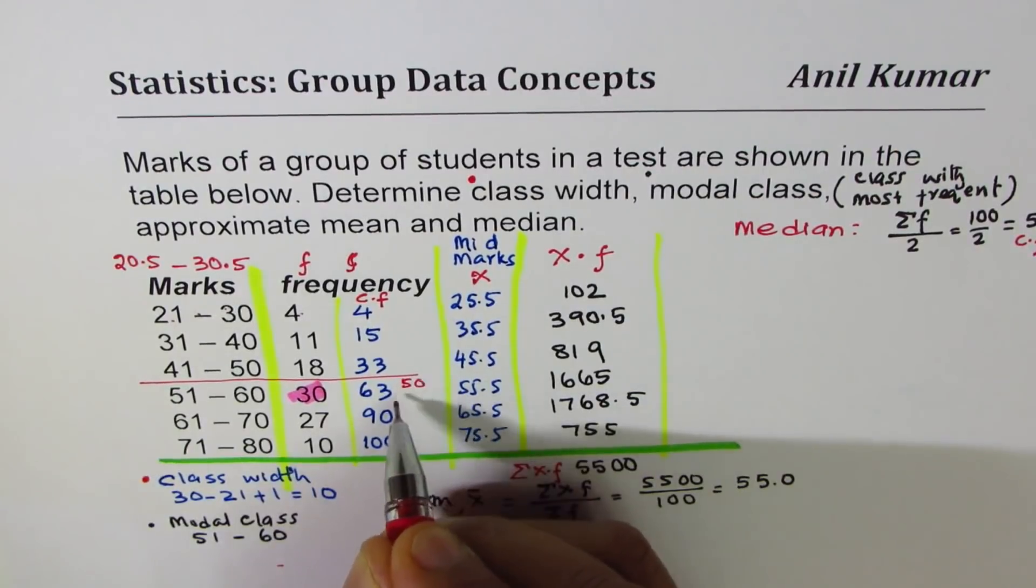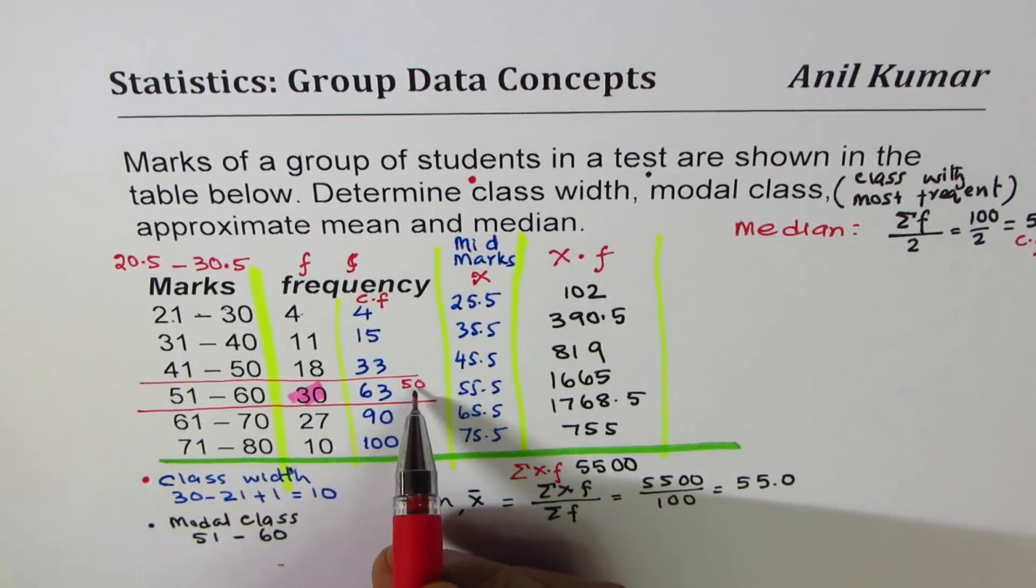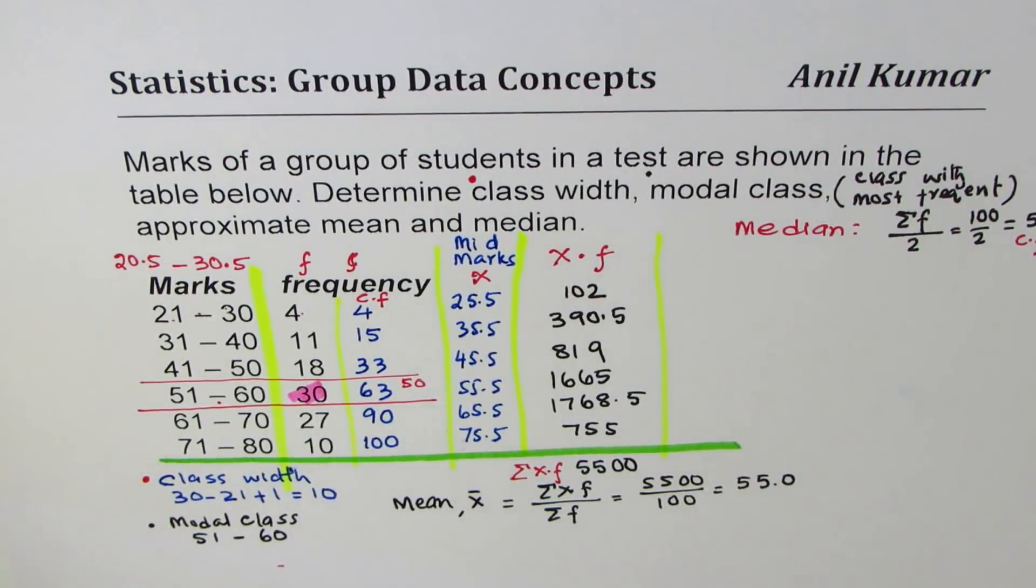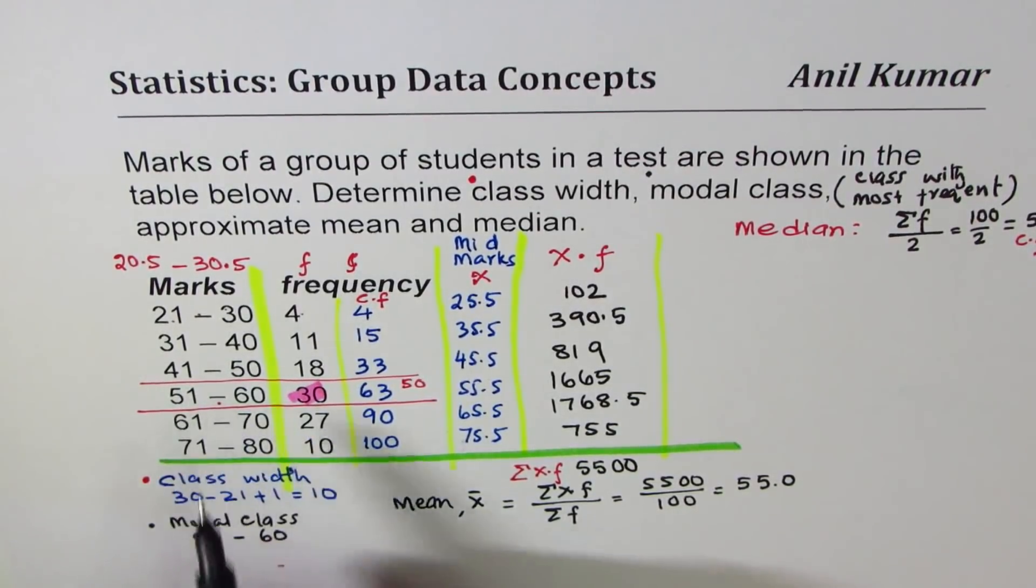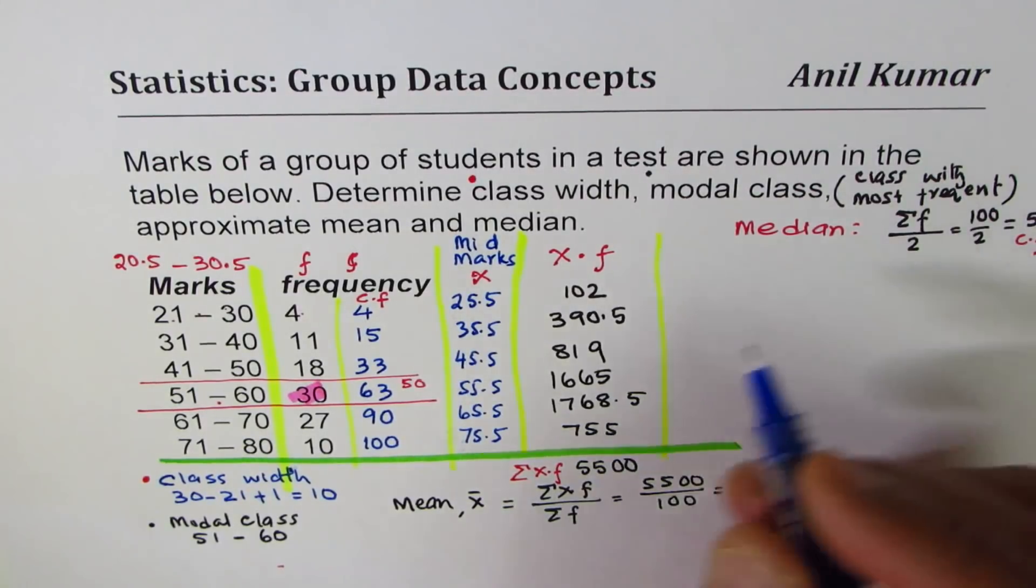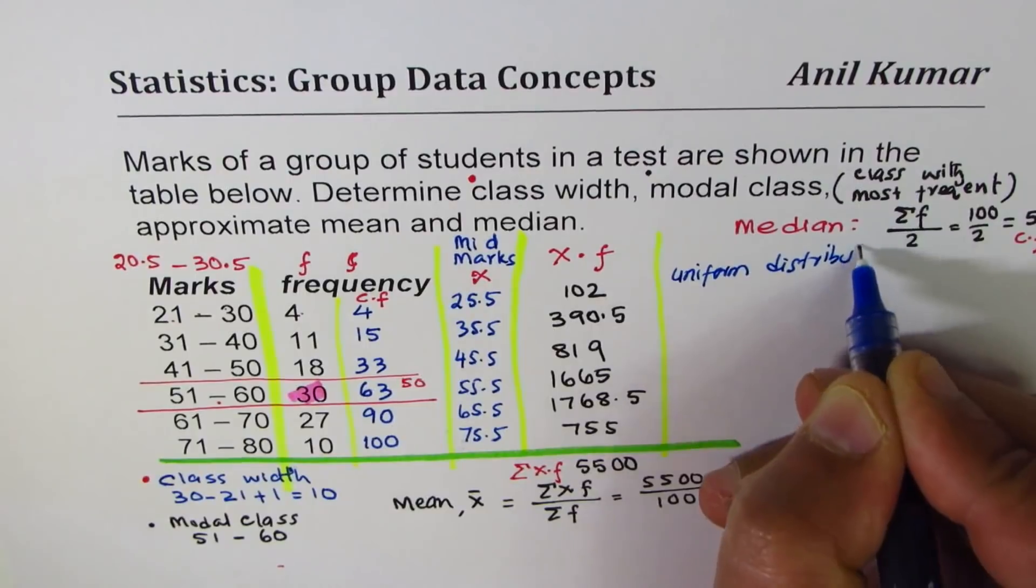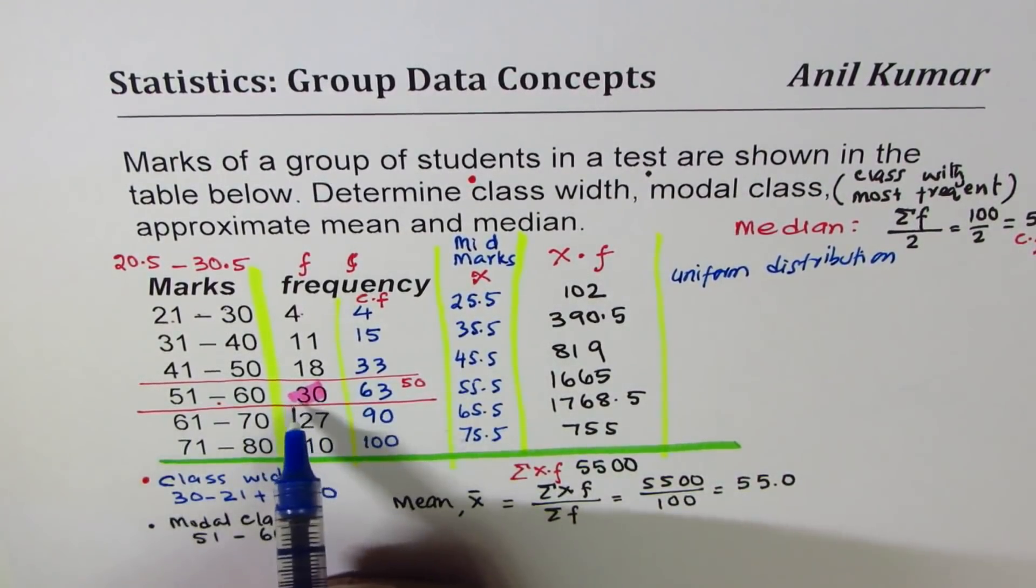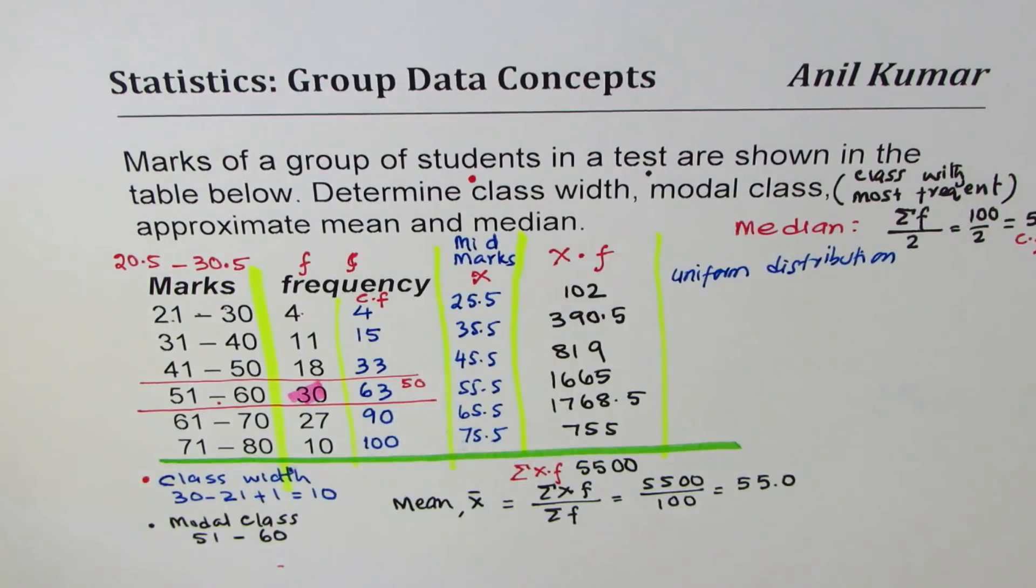Here you see number of students are 33 up to the group 41 to 50. So the 50th student is going to be in the next interval. So somewhere in 51 to 60 will be the 50th student corresponding to the median. Now at this stage we can approximately find the median as a value based on uniform distribution. We're making an assumption here and that is uniform distribution within this we have 30 students whose marks are uniformly distributed.